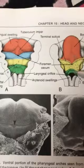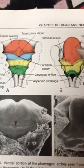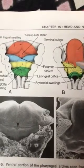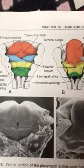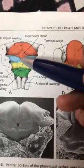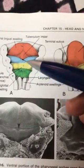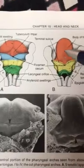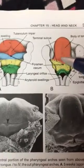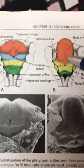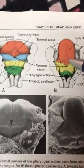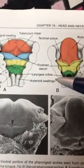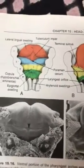That covers the general sensory supply. For special sensation (taste), the anterior two-thirds of the tongue is supplied by the chorda tympani, so the facial nerve enters the picture only via the chorda tympani, which supplies the taste pathway for the anterior two-thirds.